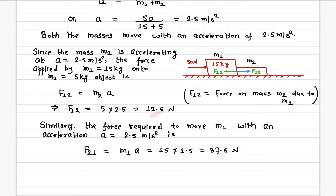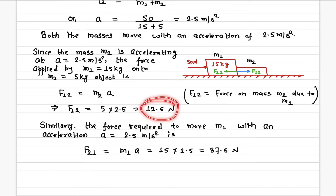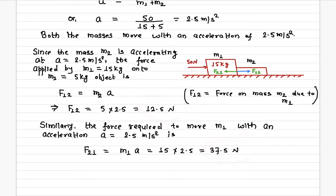So F12 equals 12.5 newtons. To move the 15 kilogram mass, the force required is 15 times 2.5, which is 37.5 newtons. Adding the two together — 12.5 and 37.5 — gives us the total of 50 newtons.